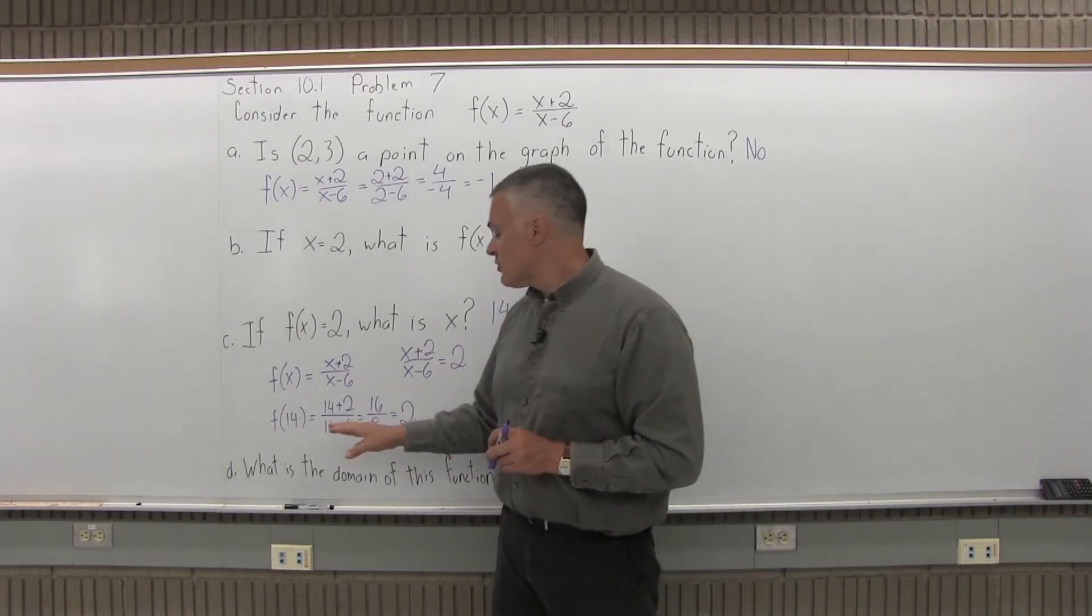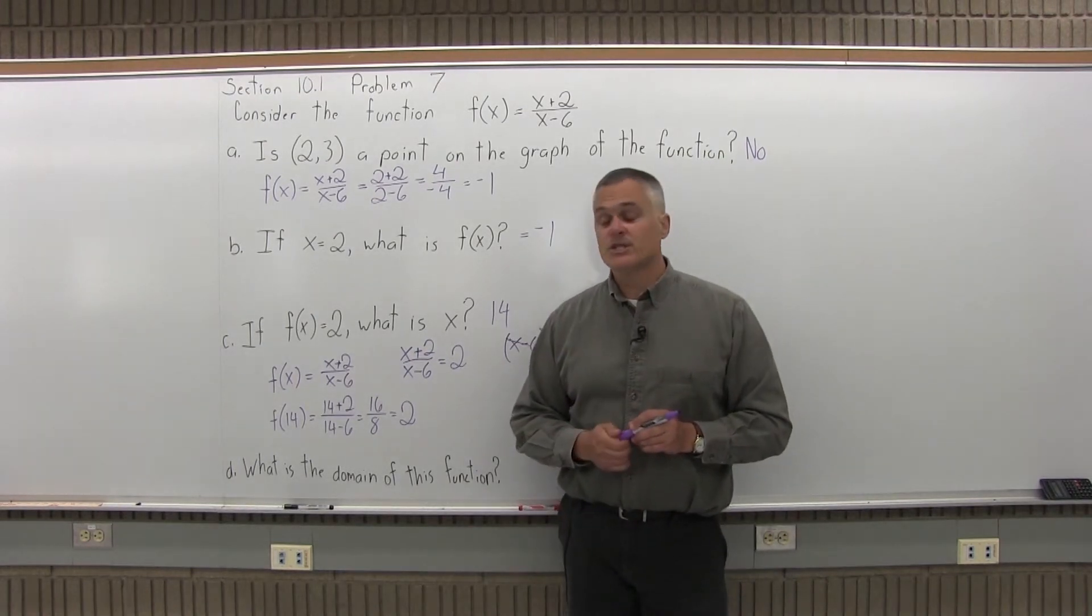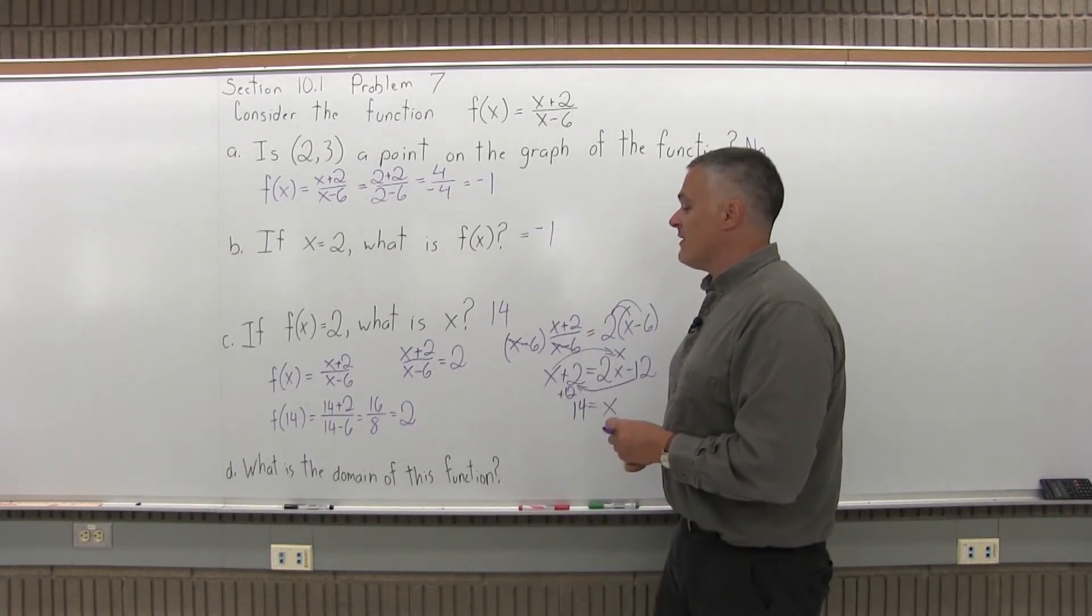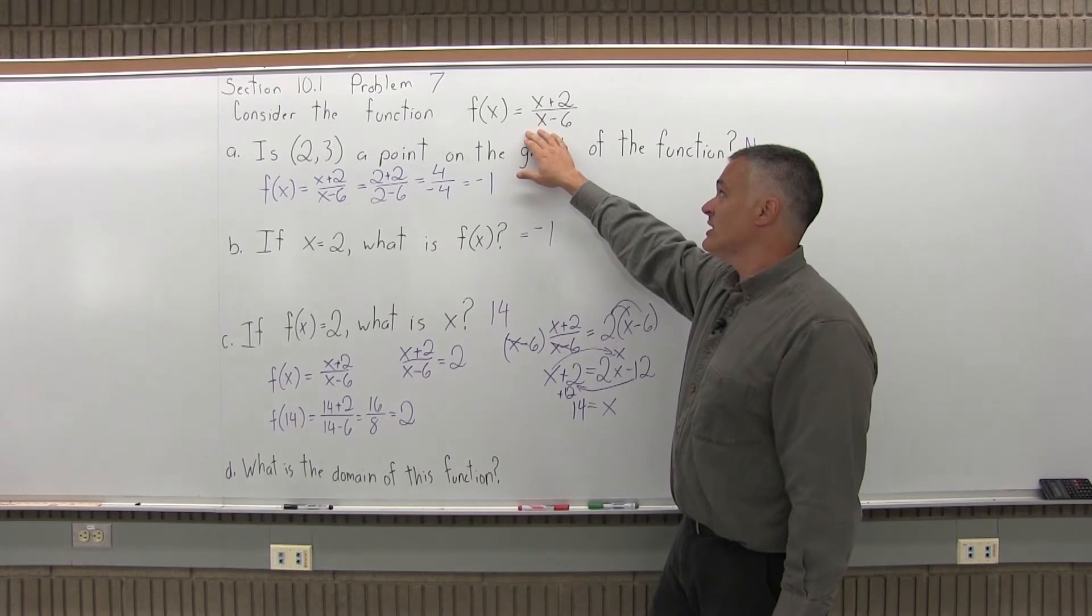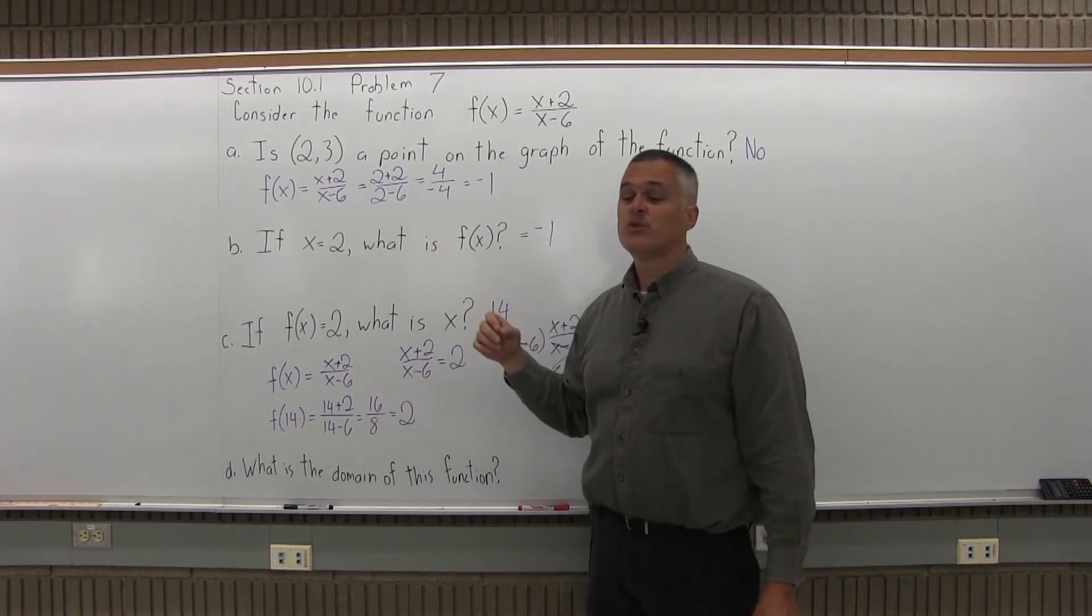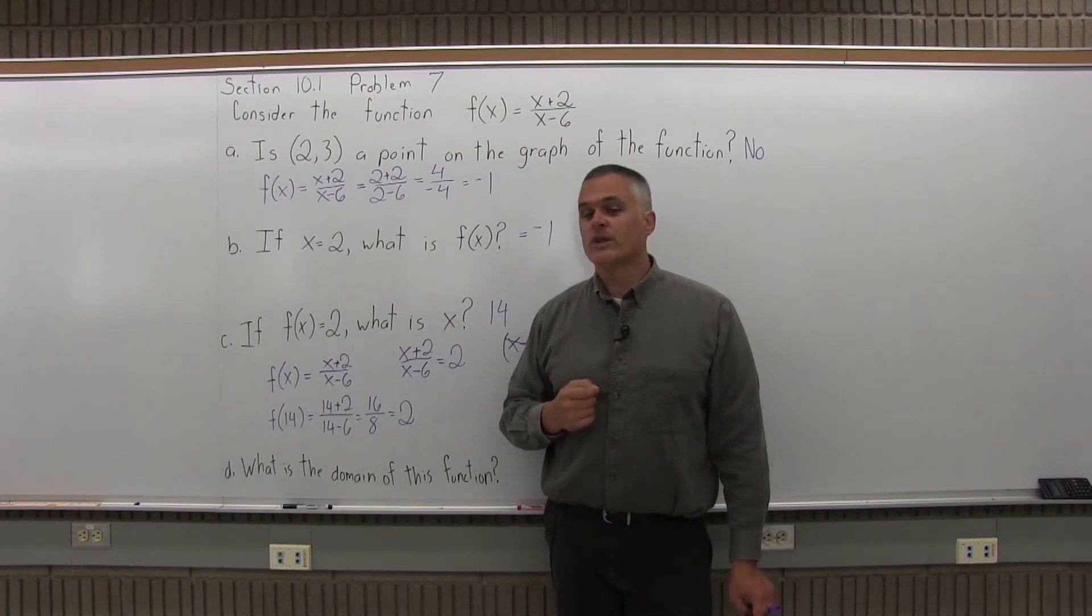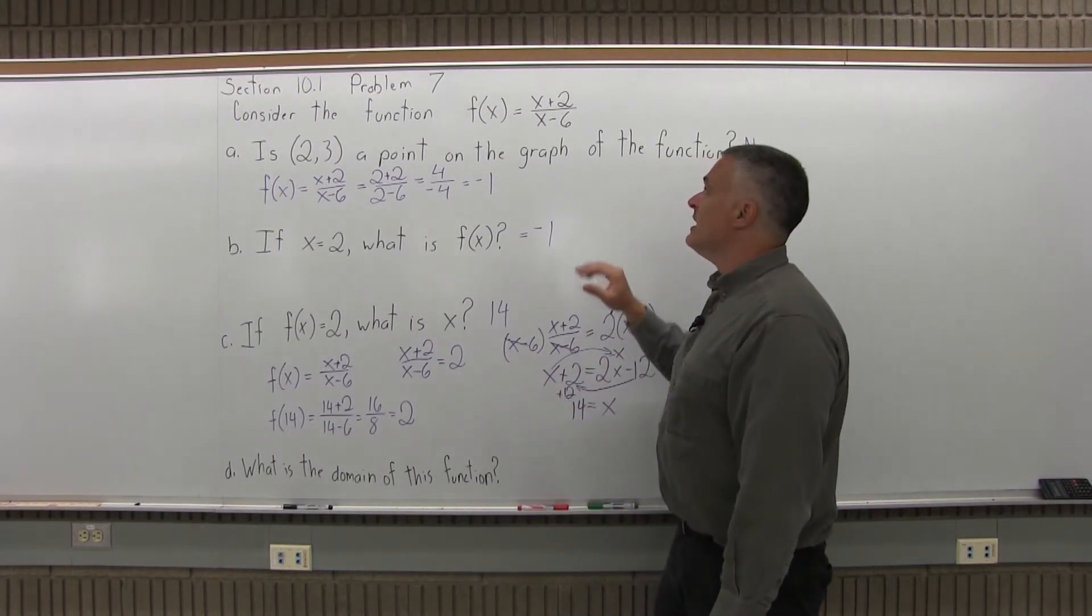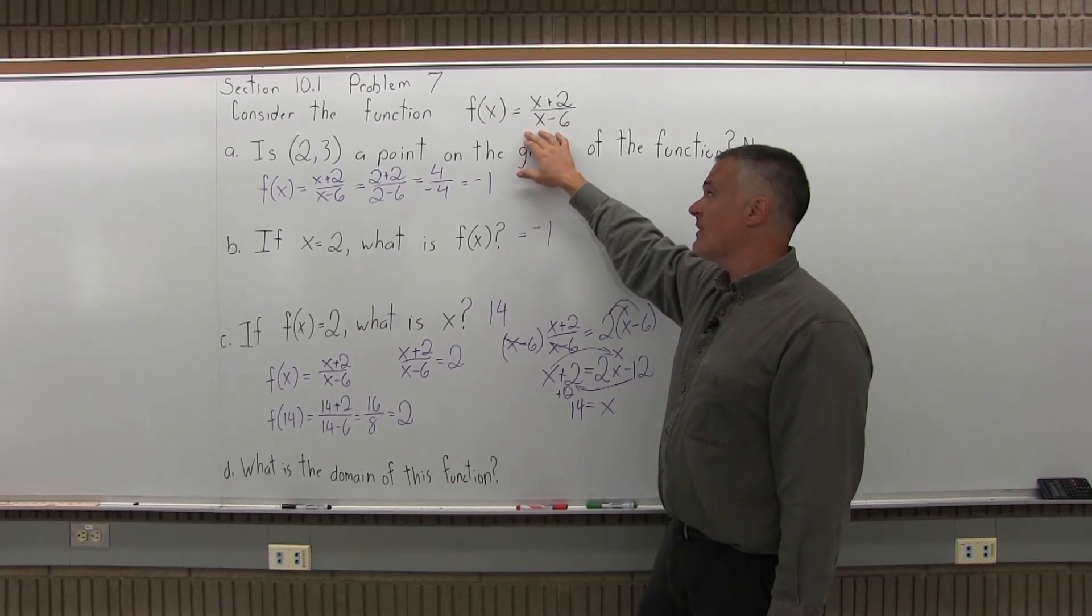And finally, part D is what is the domain of the function. And again, by domain, what the question is asking is what can you use as an input value. What can you put in for x? When you have a function that's given to you in the form of an equation, what you want to check is you want to eliminate any values that you might use as an input that will zero out a denominator or put a negative under a square root or really a root of any even index. This function has no root of any kind in it, so I don't have to worry about that part.